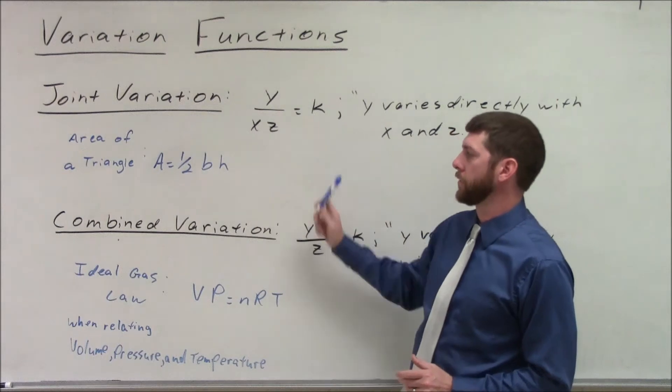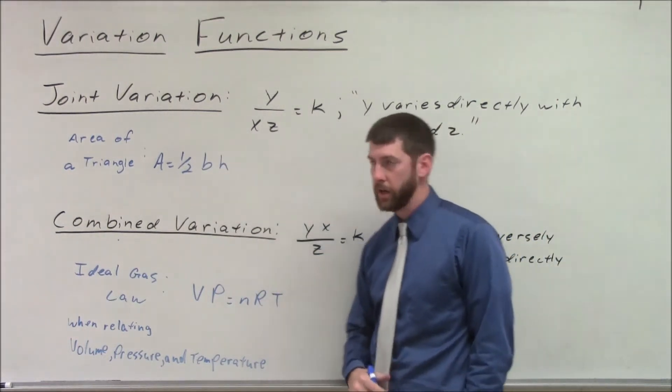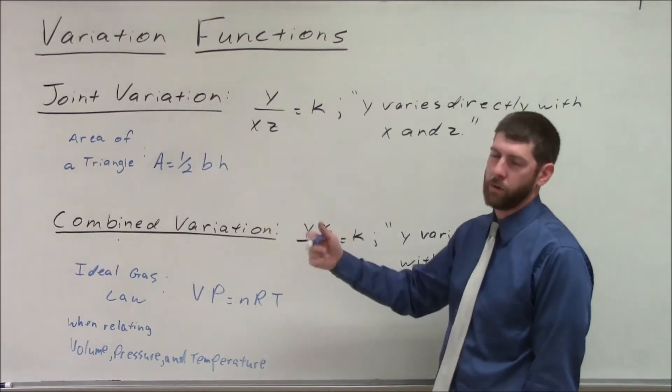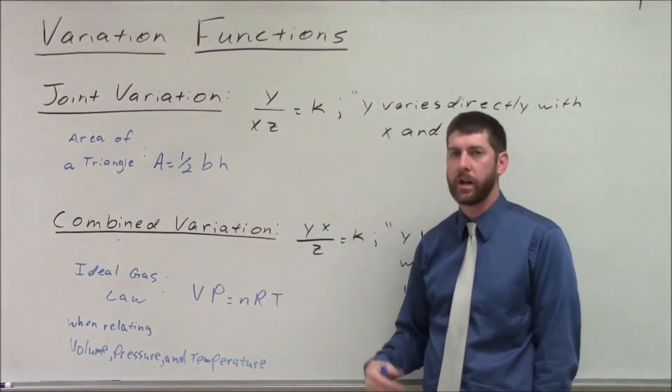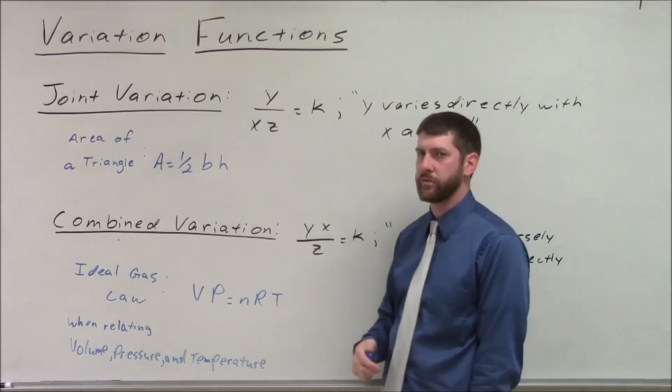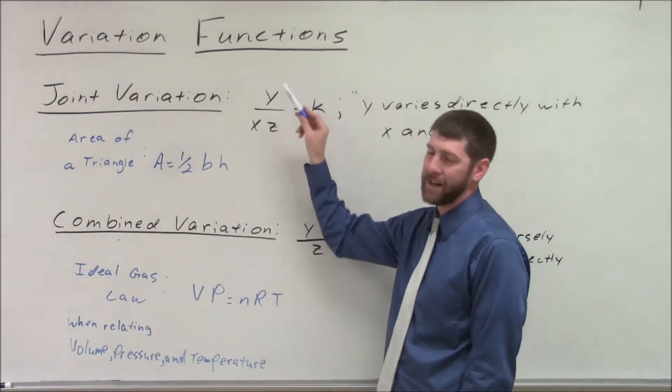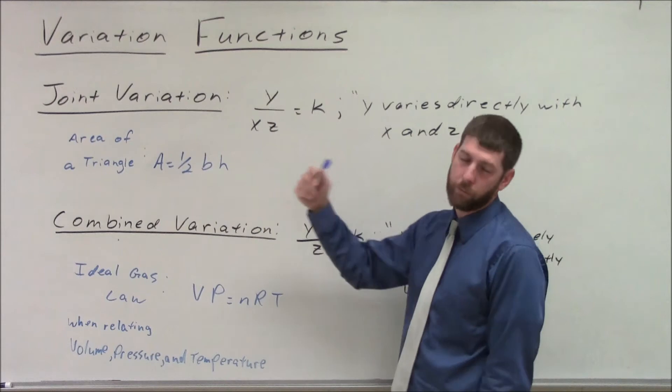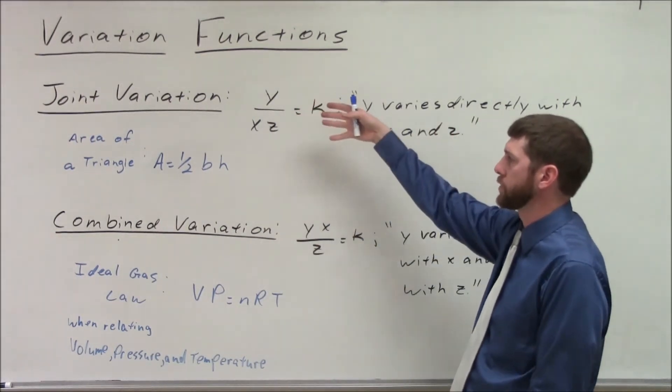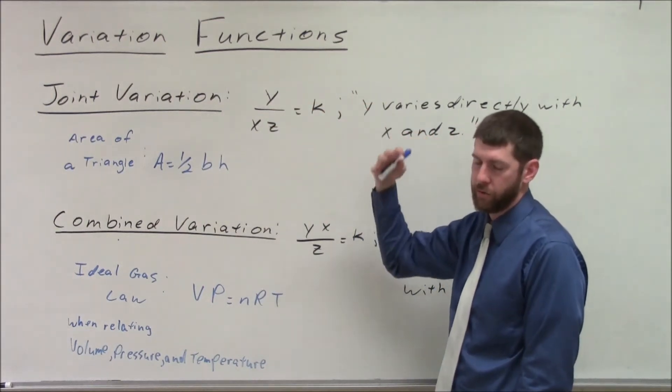So here we have the two other forms of variation functions, first of which is joint variation, and then the second is combined variation. These are where we put together direct and inverse variation. We're relating three variables together. We're going to have both direct and an inverse variation in that relationship. It's all relating back to y, or f of x, if that's what we're looking at. So you're going to have one function, or one value that we're relating everything else to.